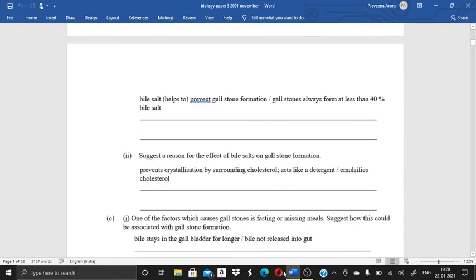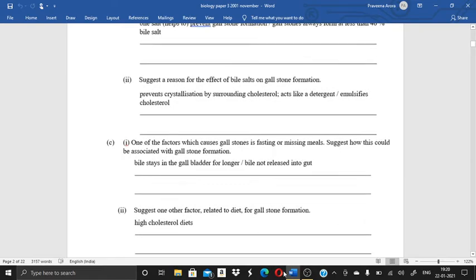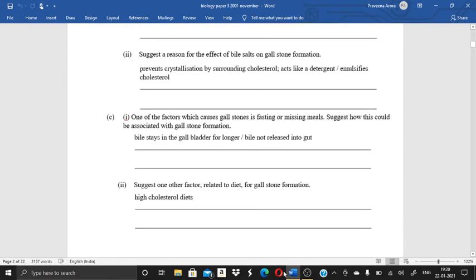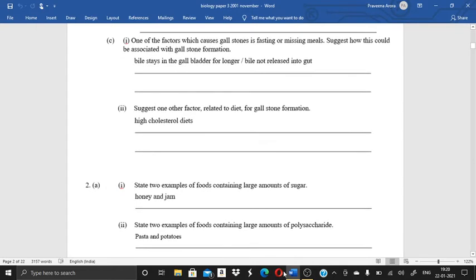Next we come on the next question, that is, suggest a reason for the effect of bile salts on gallstone formation. Then C part is, one of the factors which causes gallstones is fasting or missing meals. Suggest how this could be associated with gallstone formation. Next question is, suggest one other factor related to diet for gallstone formation.